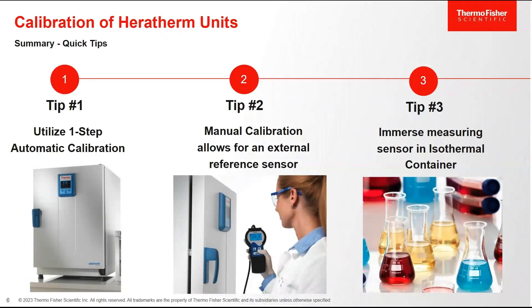Calibration of these Heratherm units is actually very simple. If you're looking to calibrate an individual unit or ensure it's calibrated at the temperature you'll run most of the time, utilize that one-step automatic calibration process. If you're calibrating multiple units with an external sensor, use the manual calibration process, which allows you to calibrate all units to that external sensor so they're all running at the same temperature. When doing manual calibration, if you have the time and equipment, immerse that measuring sensor into an isothermal container like glycerol so you're calibrating to your sample temperature, not just the air temperature. Let's now go to the immersive lab for demonstrations.